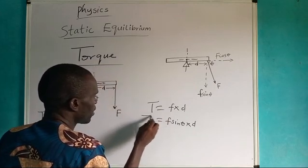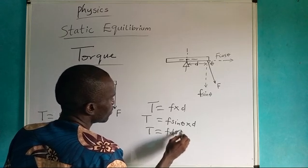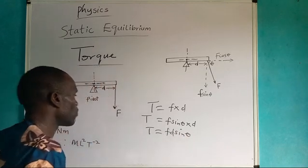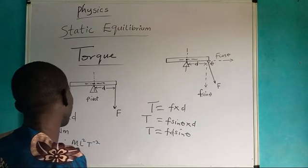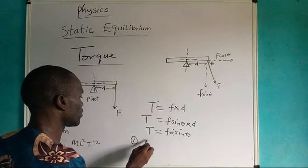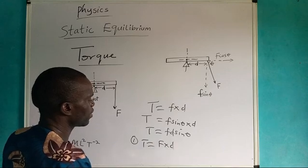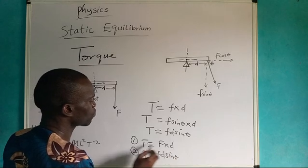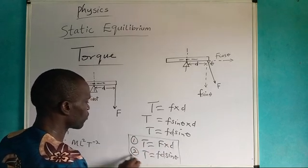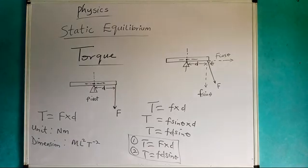These are the two formulas. The first case is when there is no angle: use F times distance. When there is an angle, use F D sine theta. Take a look at these two formulas — these are the two formulas we use for torque. This one includes the case of an angle, while this one is the no-angle case.